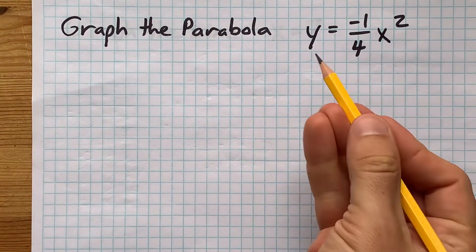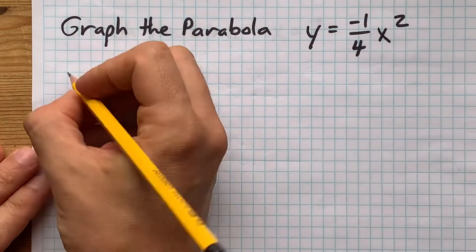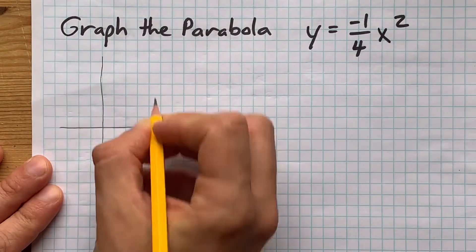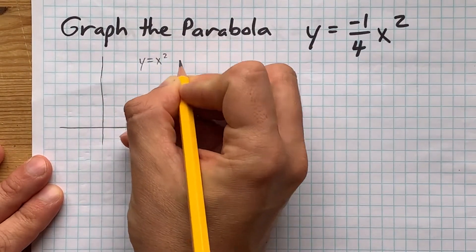Let's graph the parabola y equals negative one-quarter x squared. I'd like it if you knew what y equals regular x squared looked like on its own.